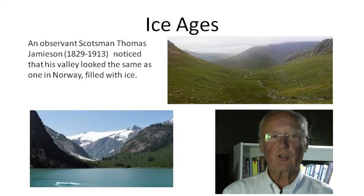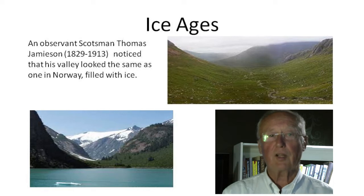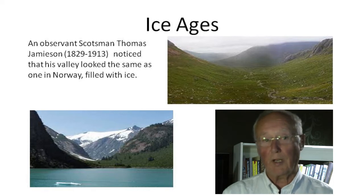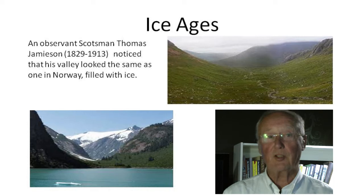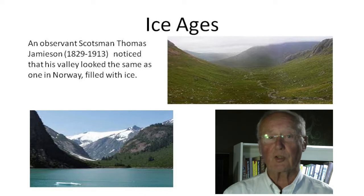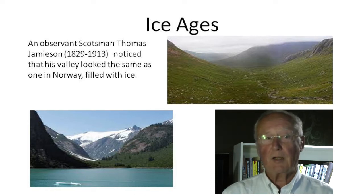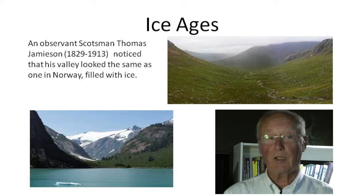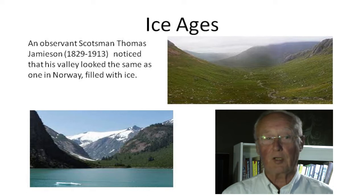This is how an enquiring mind starts scientific enquiry. Thomas Jameson looked at the valleys in Scotland and noticed that they were the same as those in Norway, which had been shaped by glaciers scouring the sides. From this he worked out that Scotland had once been covered in ice. So by around 1870, people understood that we had had ice ages in the past and that ice covered much more of the Earth than it does now.